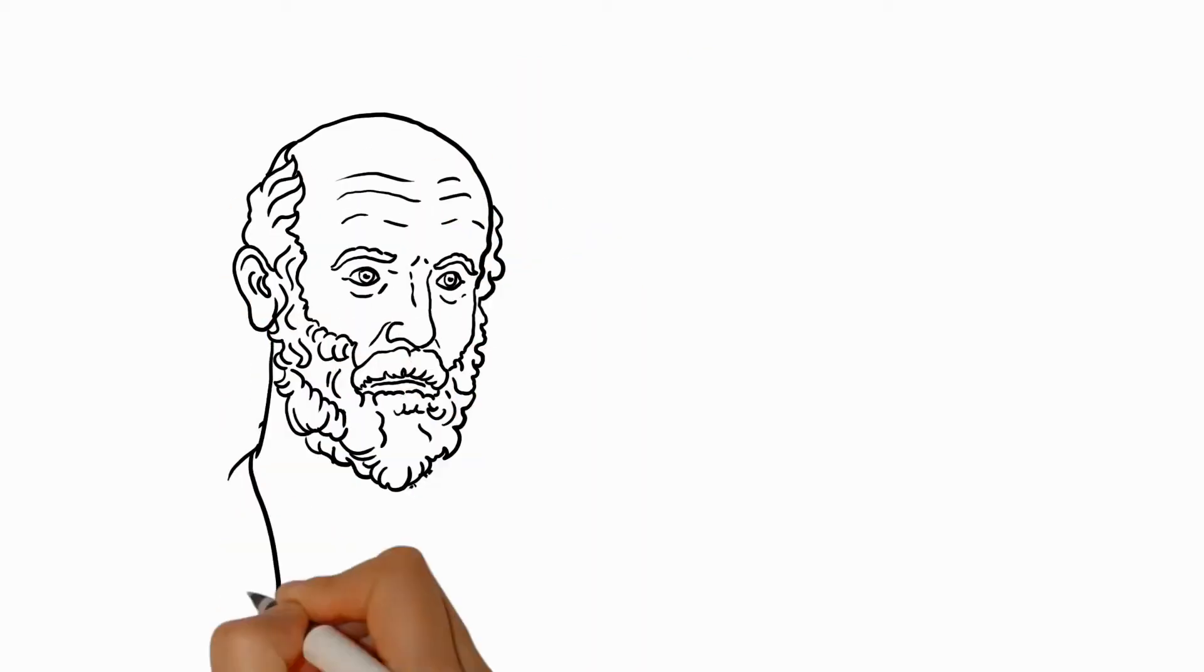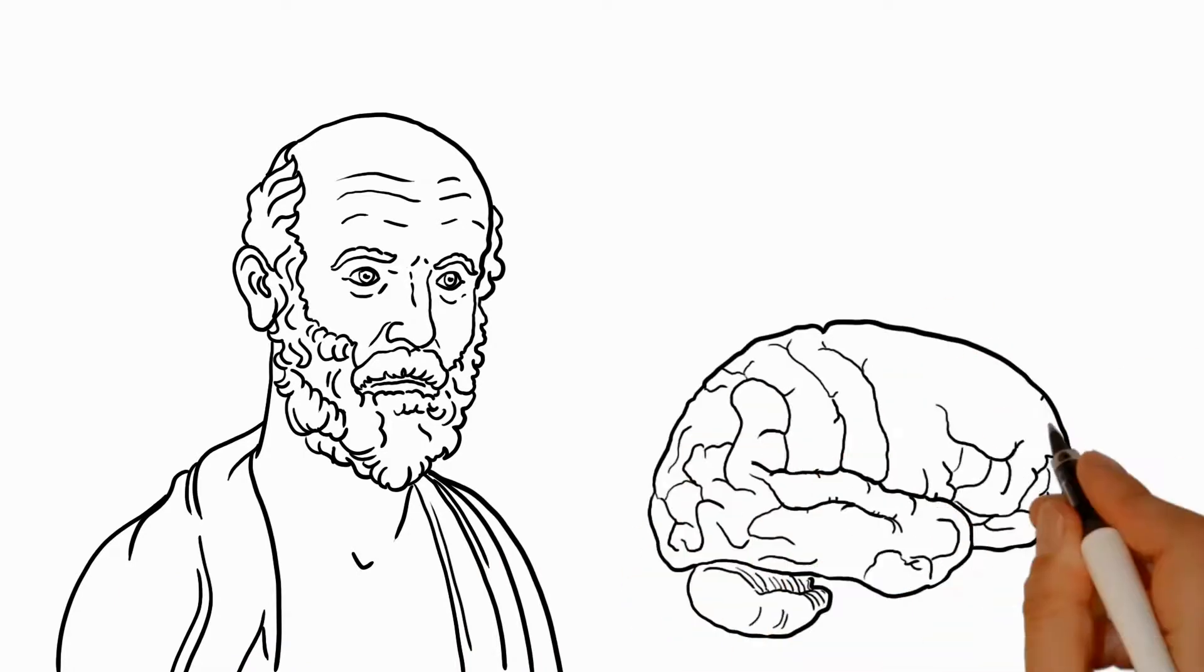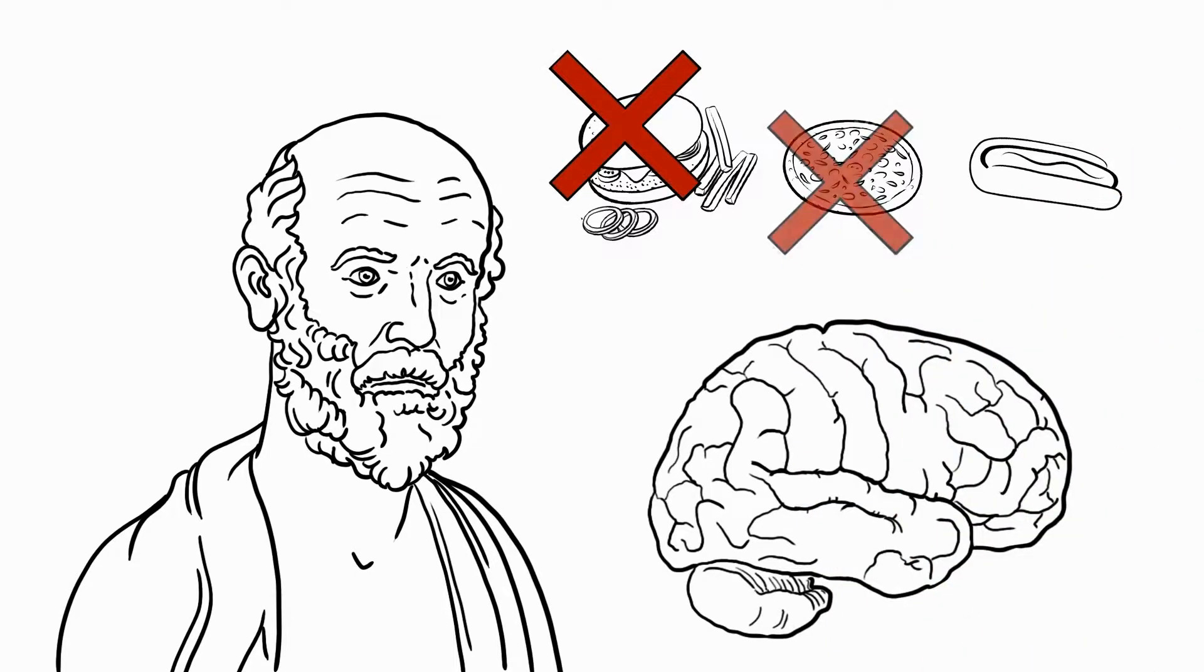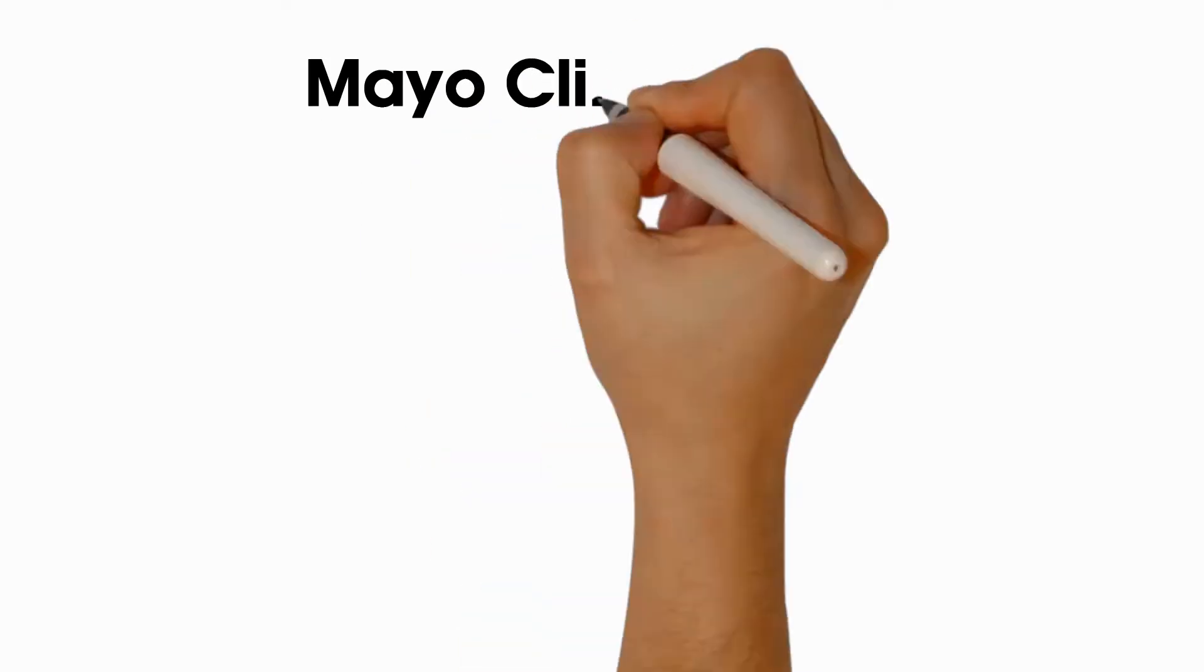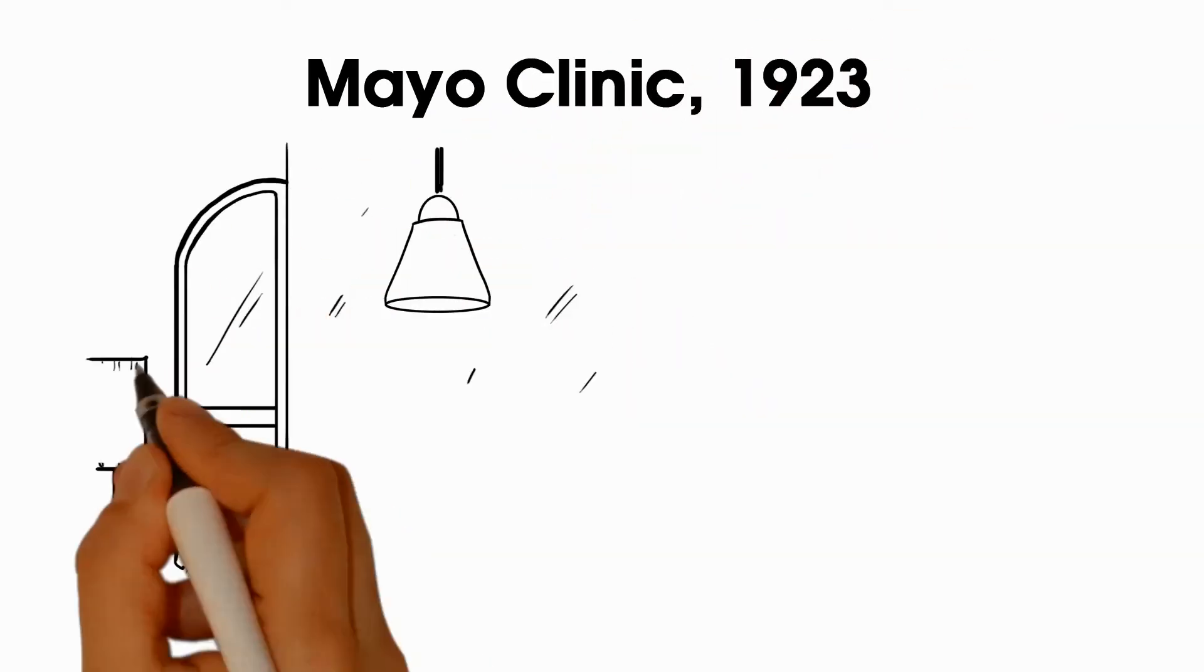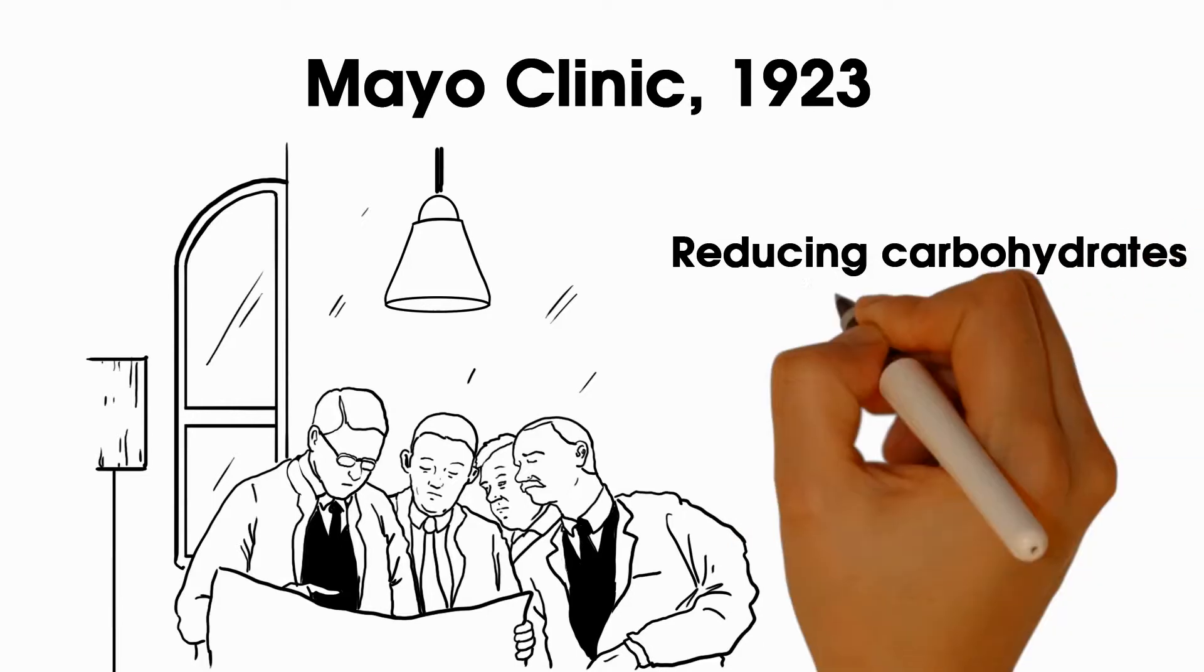Over 2,000 years ago, Hippocrates wrote that fasting had a beneficial effect on the brain. Since fasting can only be maintained for a limited amount of time, doctors from the Mayo Clinic in 1923 developed a diet that mimics its effects by reducing carbohydrates, increasing fat, and using a moderate amount of protein.